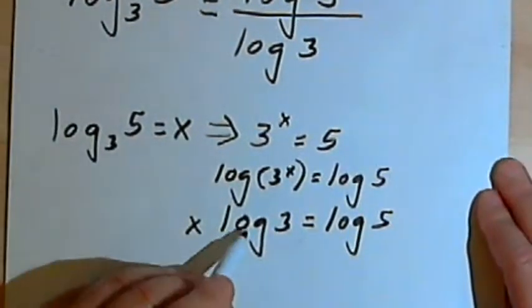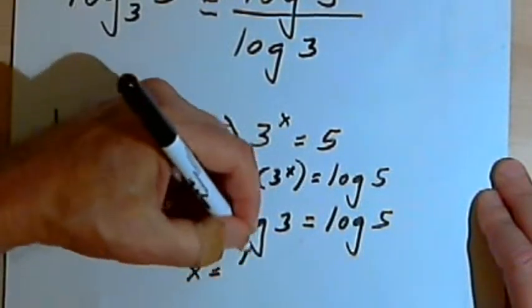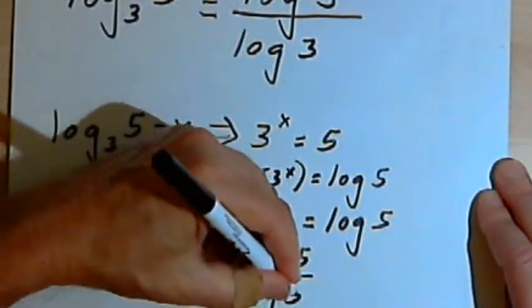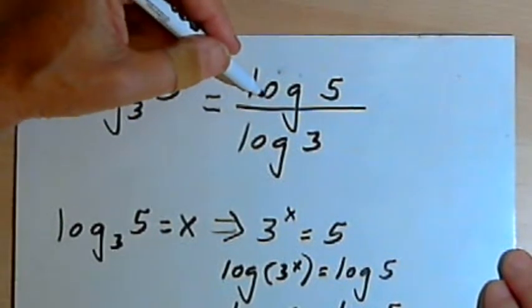And then if I divide both sides by the log of 3, I'll have x equals the log of 5 over the log of 3, which is what the change of base rule said I would get.